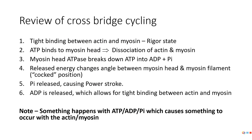To put this in words: we have tight binding — the rigor state. ATP binds, actin and myosin separate. ATP breaks down, and the energy causes the myosin head to cock. Inorganic phosphate leaves, causing the power stroke, so actin is pulled to the middle by the myosin head. ADP is released, and actin and myosin are in tight binding again. That is the basics of cross-bridge cycling, also called the sliding filament theory, because we're sliding actin and myosin over each other.